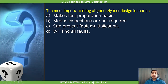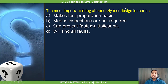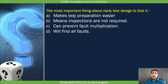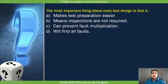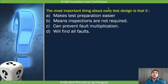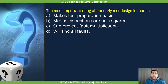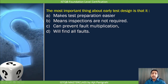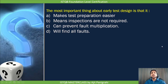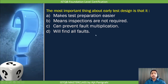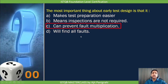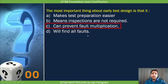Next question: The most important thing about early test design is that it can prevent fault multiplication. Option A says it makes test preparation easier — not the primary point. Option B says inspections are not required — completely false. Option C says it can prevent fault multiplication — yes, if you test at the requirement level you avoid faults multiplying to later stages, so option C is the answer. Option D says we will find all faults — false statement.